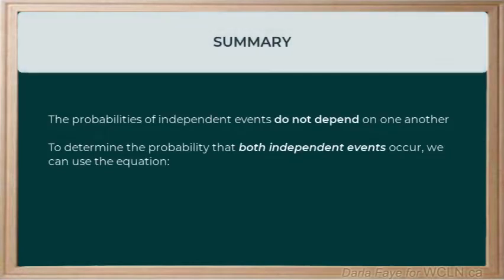In this quick video, we first identified what it means to have independent events. Then in the second part, we looked at two examples where we determined the probability of each event and figured out the probability of both events occurring, given that they were independent events.